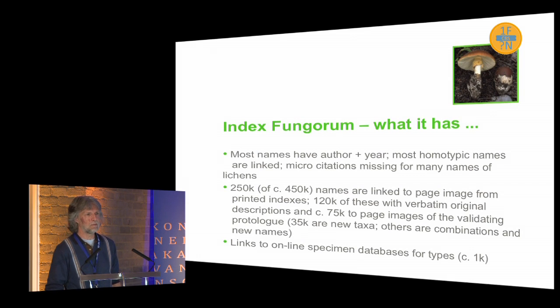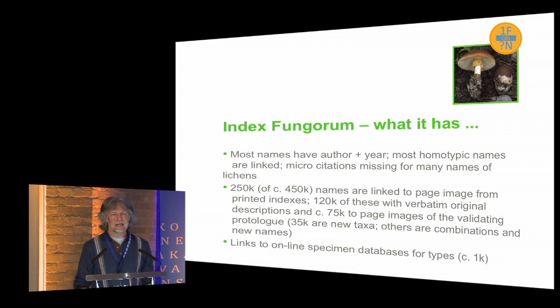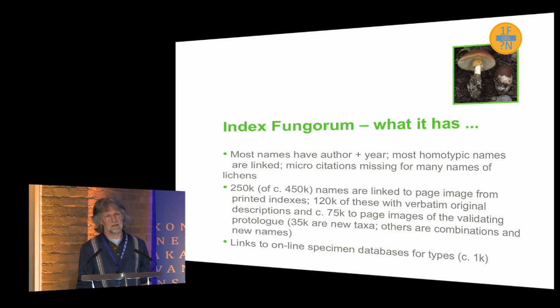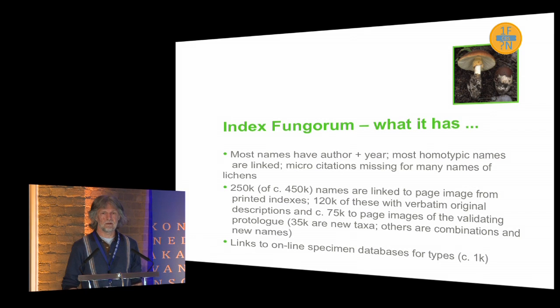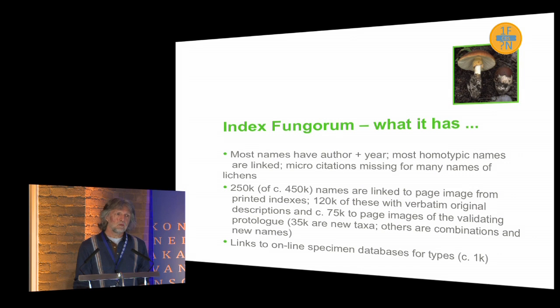It has about 250,000 of the 450,000 names linked to various published lists from the past, and many of those — particularly those of Saccardo and before — include a verbatim translation of the original diagnosis, so there is diagnostic information about many names in Index Fungorum. In recent years we have attempted to link names to the validating protolog, which now accounts for between 75,000 and 80,000 names, of which half are linked to the original publication rather than a subsequent combination.